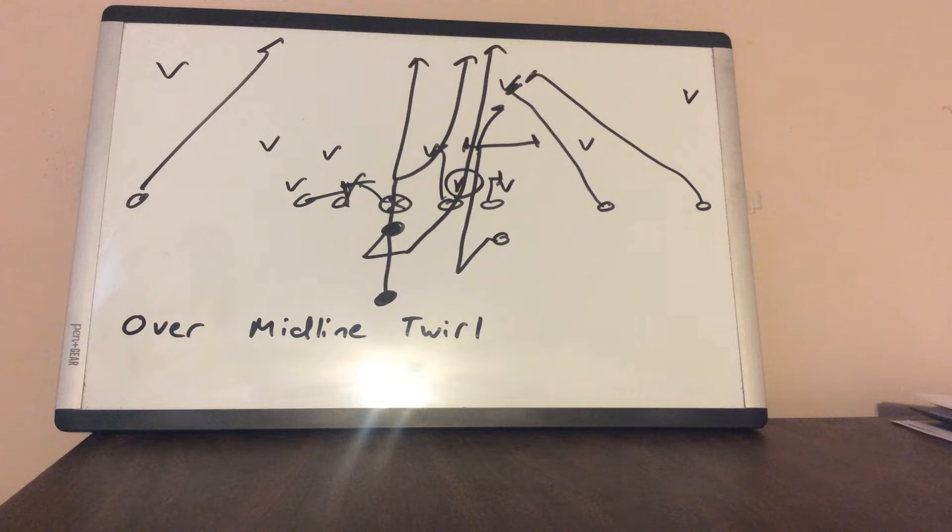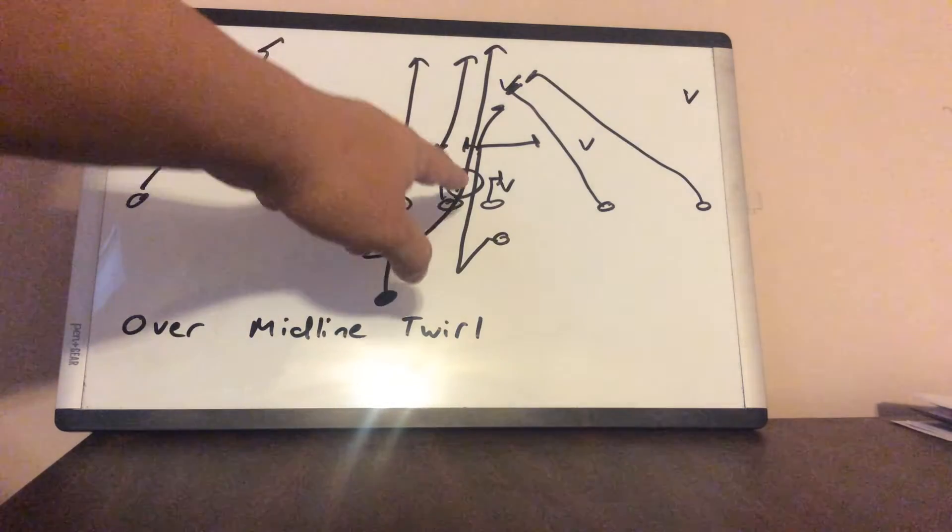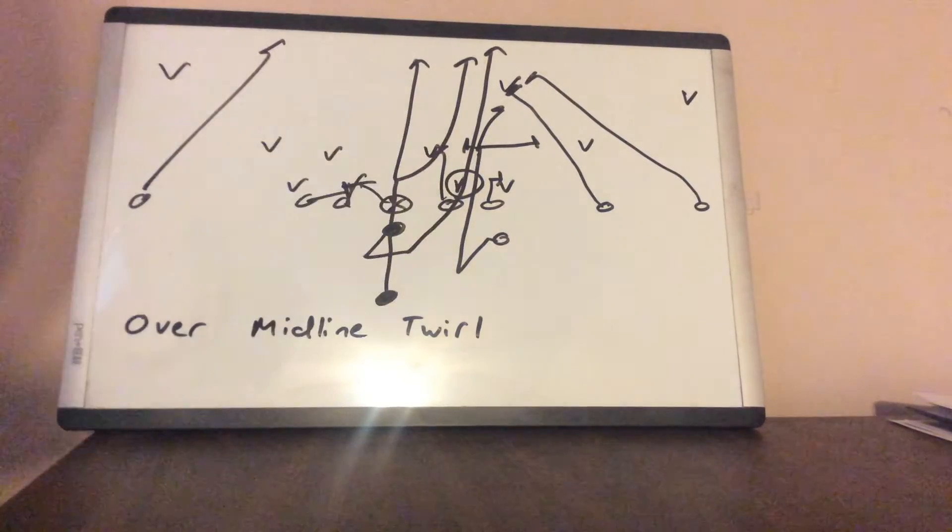However, it's something you can absolutely use, especially if they give you one high safety. So what happens is you're going to read the first person from a two to a four technique. So you're going to read the three technique and here's how it's blocked.